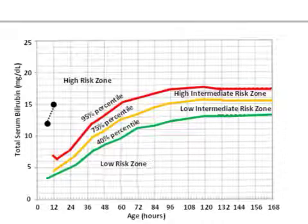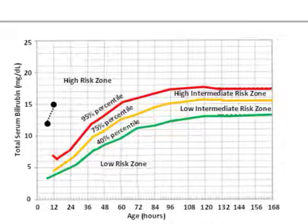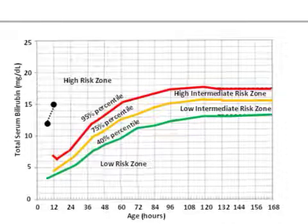This is a beautiful zone you should remember. There is a high risk zone, a high intermediate zone, and a low risk zone. More than the 95th percentile is the high risk zone, and less than the 40th percentile is the low risk zone. On the lower axis you see age in hours after birth, and on the left side is total serum bilirubin. I'm going to explain the risk factors for indirect or unconjugated hyperbilirubinemia with regard to high zone or low zone.